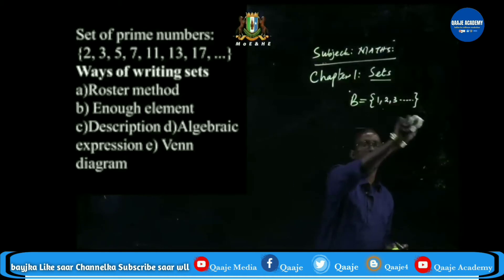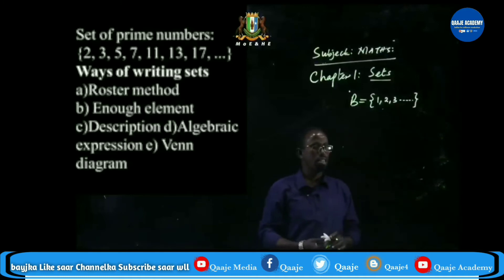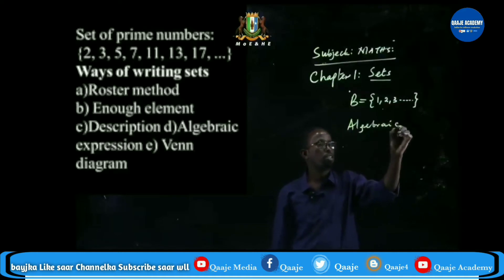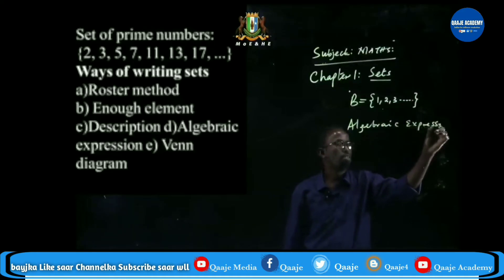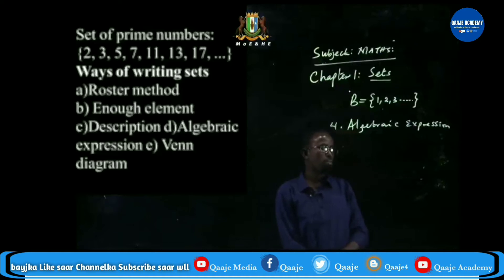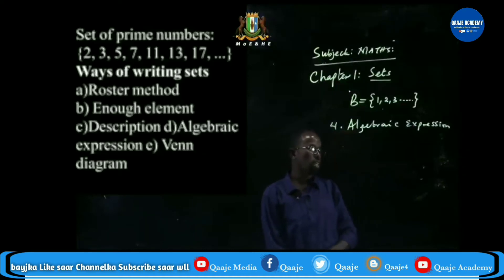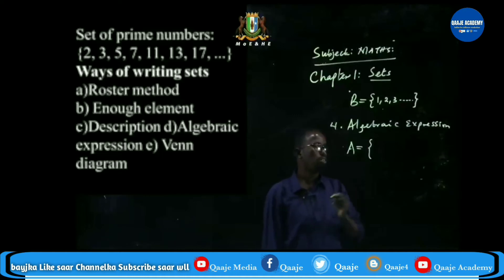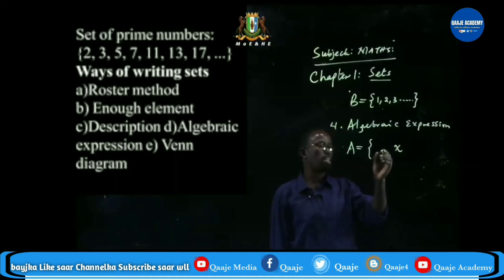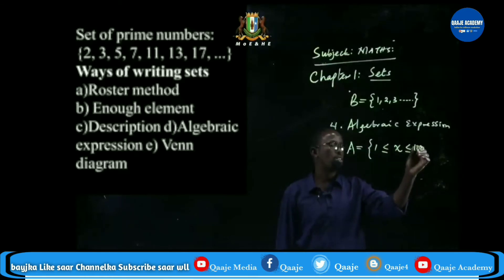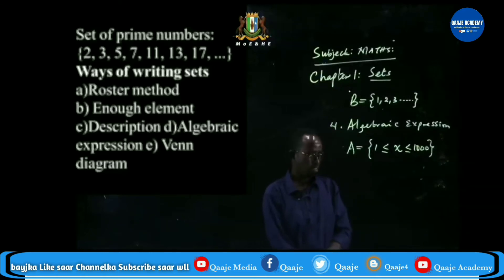The fourth way of writing sets is by algebraic expressions. For example, if I want to list all numbers from one up to one thousand, it would be very tedious to write them all. So I name the set: set A = {x | 1 ≤ x ≤ 1000}. That is another way of writing sets.